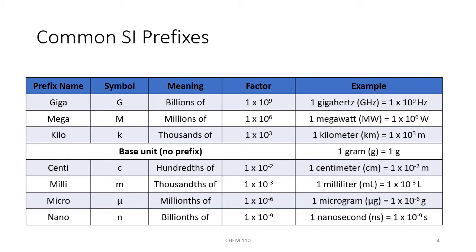The prefix name giga is symbolized with a capital G and it means billions of. One times ten to the ninth is the factor. The prefix mega is symbolized with a capital M and it means millions of. The factor is one times ten to the sixth. Kilo is symbolized with a lowercase k and it means thousands of. The factor is one times ten to the third. The base unit has no prefix in front of it.